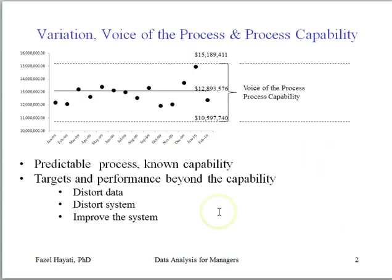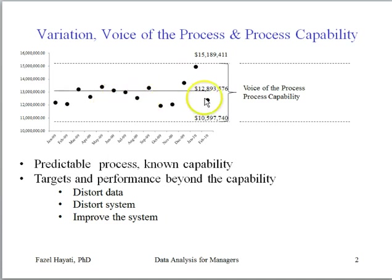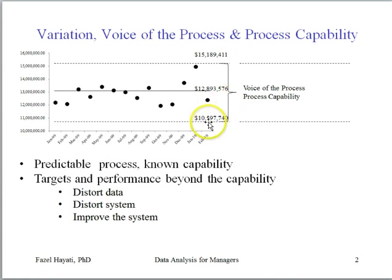This is the monthly revenue from a company, and we have collected data for the past several months and established our central line, upper and lower control limits. Based on the previous several months, the monthly revenue averages about $12.9 million. The lower control limit is about $10.6 million, and the upper control limit is about $12.2 million.